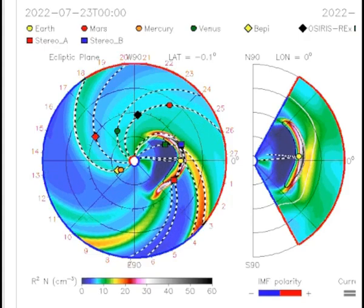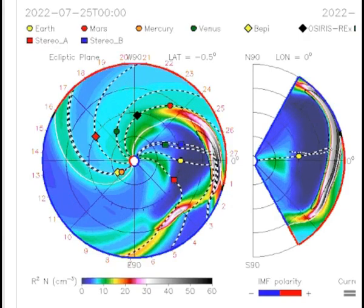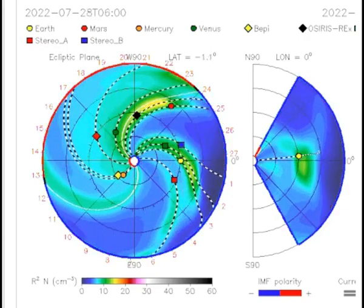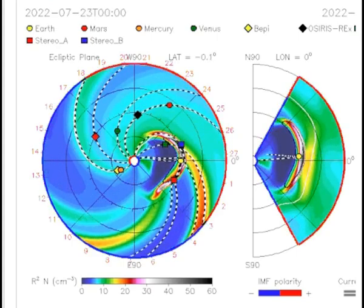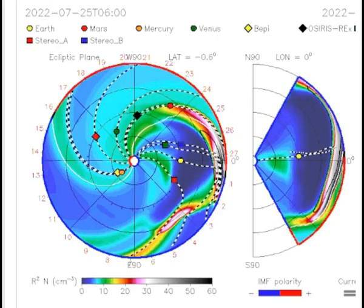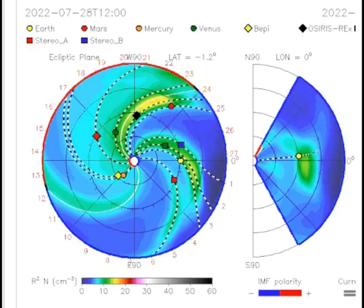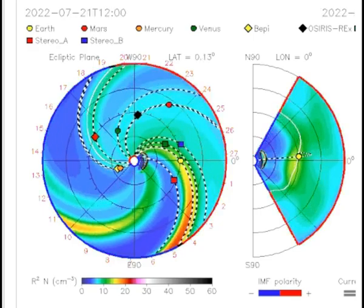Geomagnetic storms possible tomorrow. Full halo CME expected to hit us. The storm cloud was hurled towards Earth yesterday by a solar tsunami eruption. NOAA forecasts say that it would be G1 to G2 class. Minor to moderate storms are likely with a slight chance of escalating to category G3, which is strong.